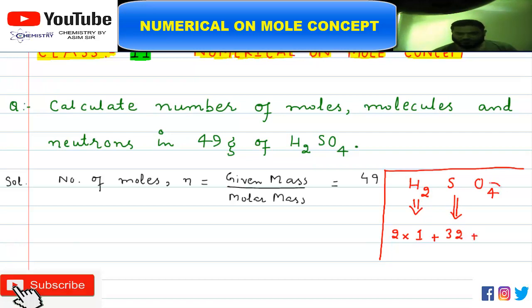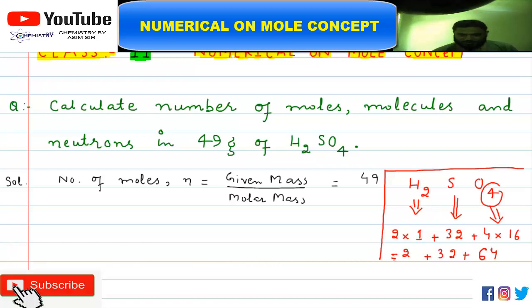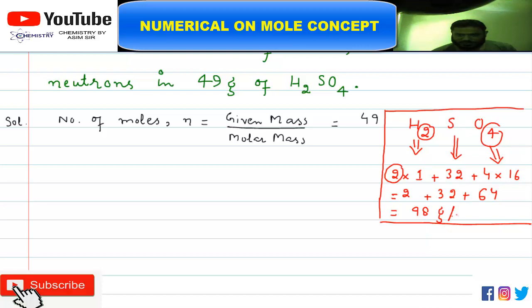Then we have 4 oxygen atoms, and the atomic mass of one oxygen is 16U, so that gives 4×16 = 64. Adding everything up: 2 + 32 + 64 = 98. So the molar mass of sulfuric acid is 98 grams per mole.